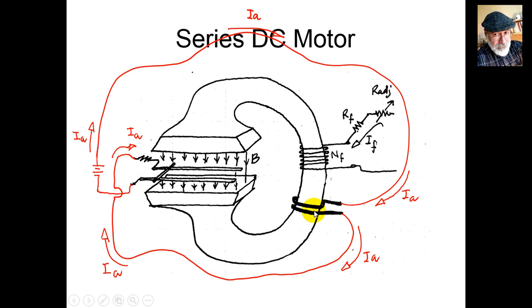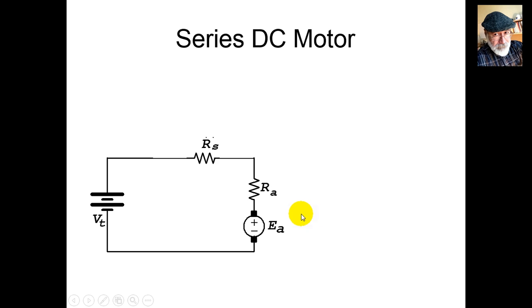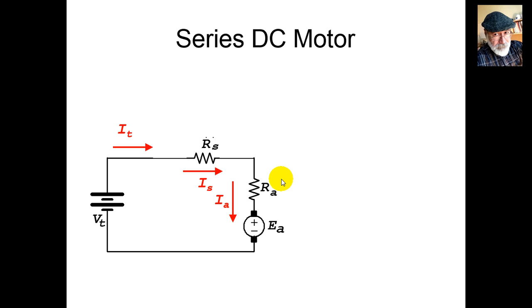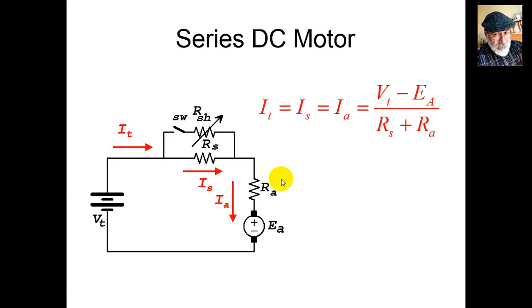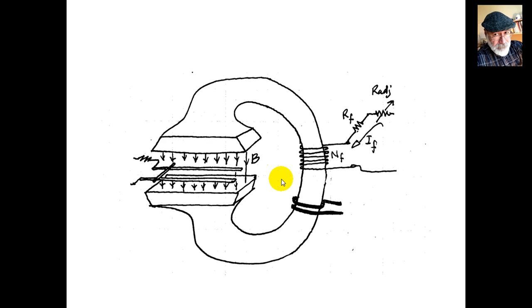Circuit diagram for series excitation: the external battery, the series coil represented by its resistance RS, and the armature are all in series. The currents in this circuit are the armature current I_A, the series coil current I_S, and the terminal current I_T. To control the current I_S, we connect a control resistance RSH in parallel with the series coil, so I_S is given as a current divider of the terminal current.